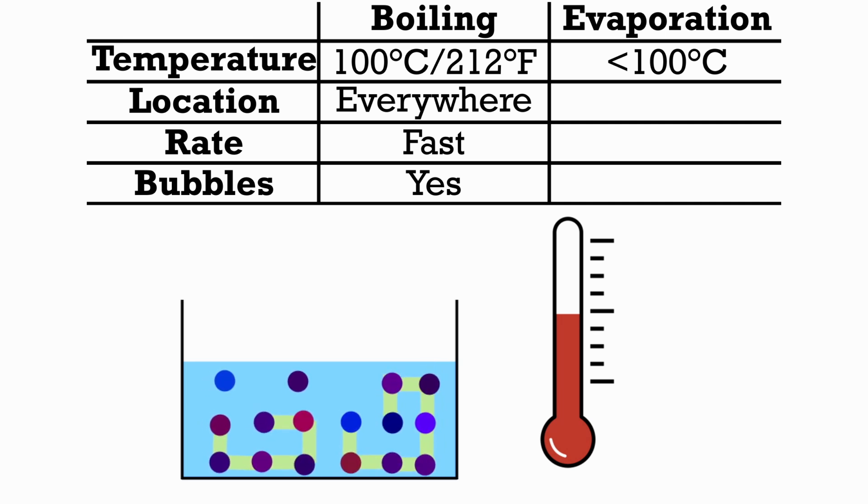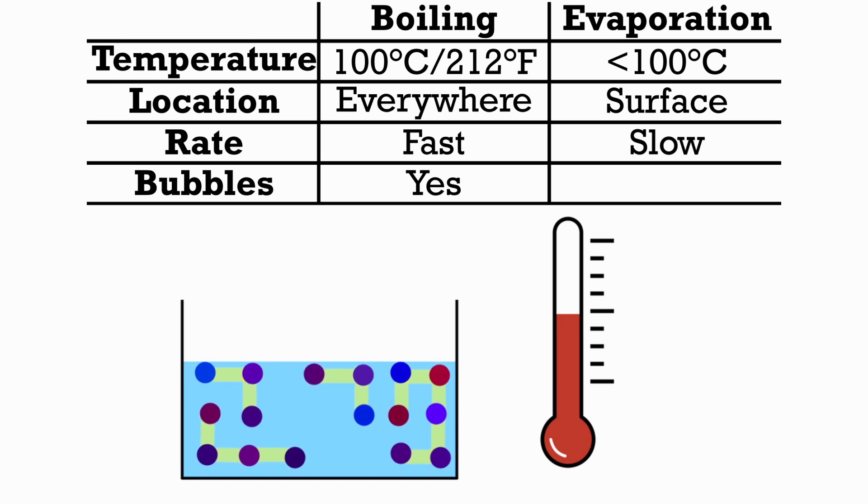It only affects the molecules on the surface, because if one of the molecules deeper in the water has enough energy to break free, it will eventually collide with another molecule and lose its energy. Then it will regain its bonds so it's unable to escape. This explains why the rate of evaporation is much slower than that of boiling. It also explains why there's no bubbles, as there's no gas being formed in the depths of the container.